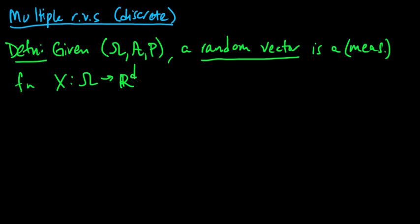that's d-dimensional real space, where d is some positive integer, 1, 2, 3, etc. So you pick d for your particular random vector.